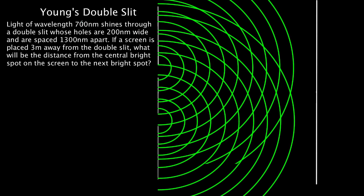I think we should look at an example of Young's double slit. Let's consider light of wavelength 700 nanometers. That would mean this distance right here between peaks is 700 nanometers apart.